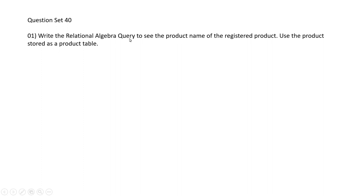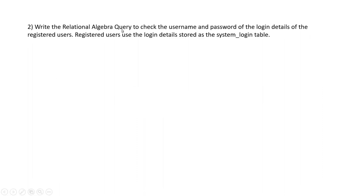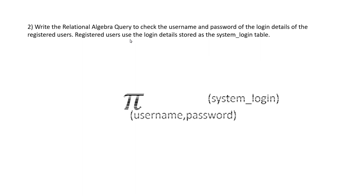As you can now see, this is my answer to this question. We are using the phi symbol in this relational algebra query, which means projection. In the second question, we have to write a relational algebra query to check usernames and passwords of registered users. As you can now see, this is my answer to this question.